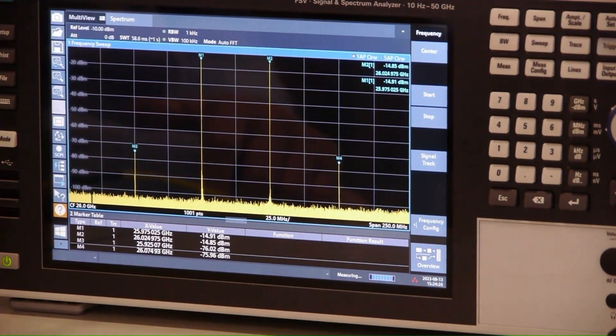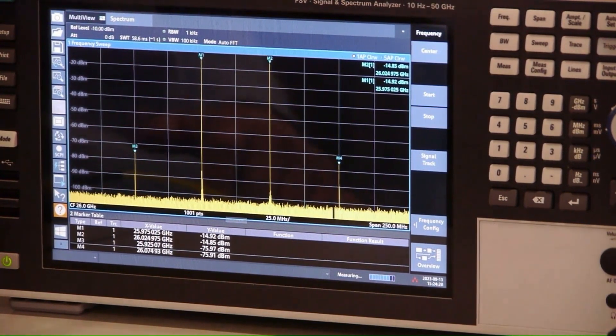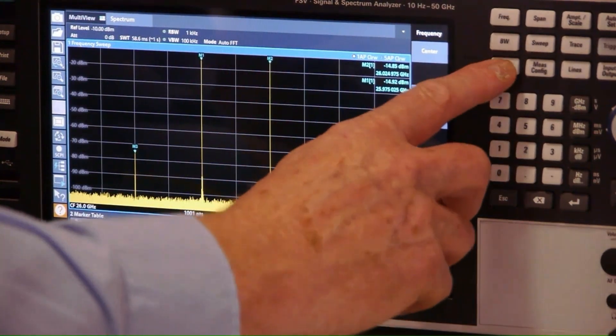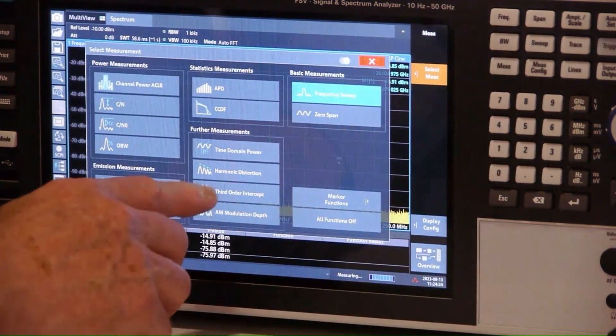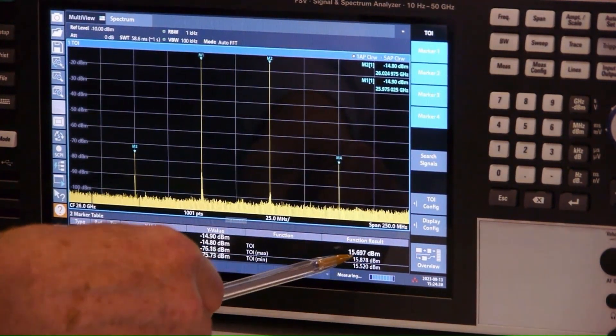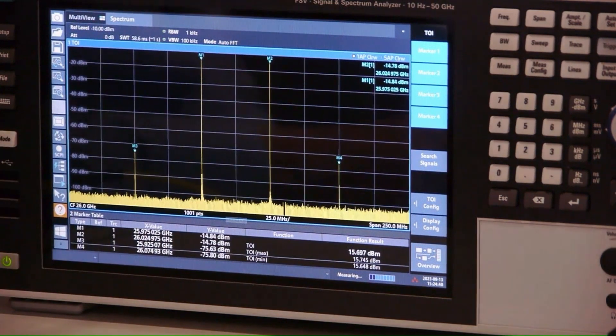So that's how to do the measurement manually. Some modern instruments can do this automatically for you, and this instrument can. Let's see what it comes up with. And it's showing the third order intercept of 15.6 dBm, which is pretty close to what we calculated manually.